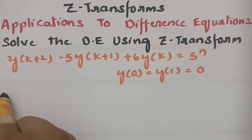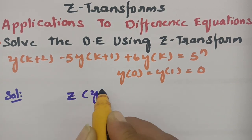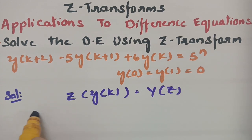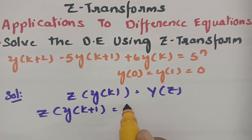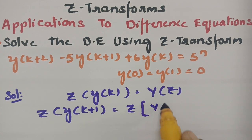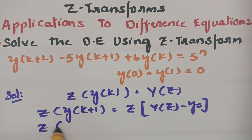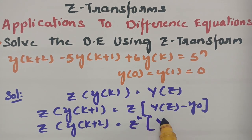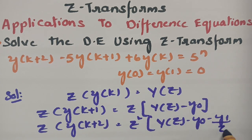In order to solve this we have certain conditions: Z-transform of y(k) = Y(z); Z-transform of y(k+1) = z·Y(z) - y(0); and Z-transform of y(k+2) = z²·Y(z) - z·y(0) - y(1).